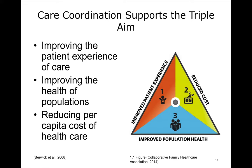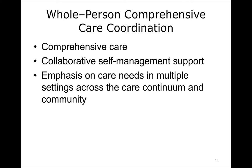The triple aim of care coordination is improving the patient experience of care, improving the health of populations, and reducing per-capita cost of health care. Care coordination should be a team and family driven process that improves patient, family, and health care practitioner satisfaction, facilitates children and youth access to services, improves health care outcomes, and reduces costs associated with health care fragmentation, which can lead to under and over utilization of care. Whole person care coordination includes comprehensive care, collaborative self-management support, and emphasis on the spectrum of care needs in multiple settings across the care continuum and community, such as preventive, routine, acute, urgent, and emergent care, mental and behavioral health, advice, assistance, education, and support for making changes in health habits, and making whole person shared decisions and goals.